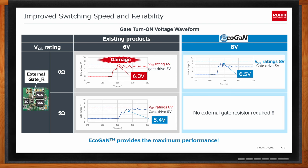The typical solution for existing products is to add an external series gate resistor to dampen the switching, but this slows the rise time and reduces system efficiency. The Rome 150-volt EcoGaN shown in blue has a VGS rating of 8 volts — 33 percent higher than the typical 6-volt limit. This allows the Rome GaN power transistor to switch rapidly without worrying about gate breakdown, so no external gate resistor is required, maximizing system performance.